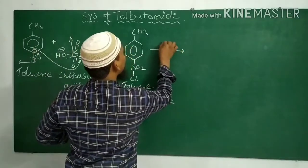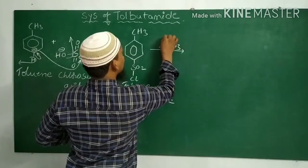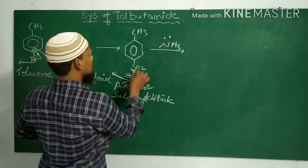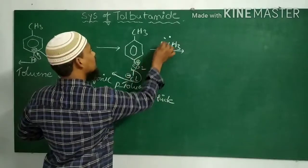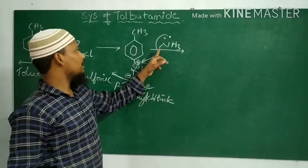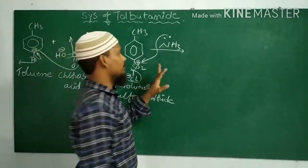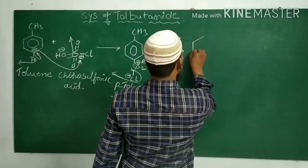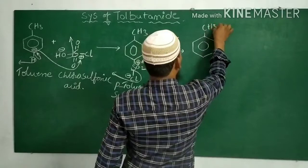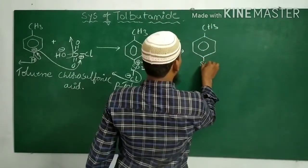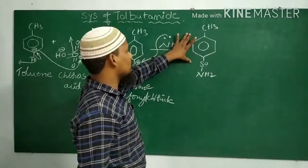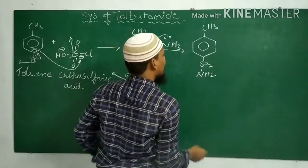Para-toluene sulfonyl chloride is again treated with ammonia. Chlorine gets eliminated as Cl minus, and the sulfur gets a positive charge. The ammonia donates its lone pair of electrons to the sulfur, and thereby a nitrogen-sulfur bond forms. The resultant molecule is para-toluene sulfonamide.